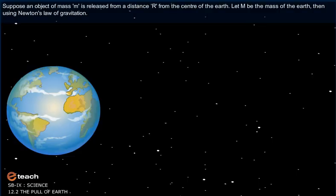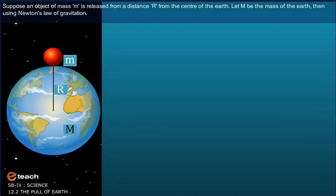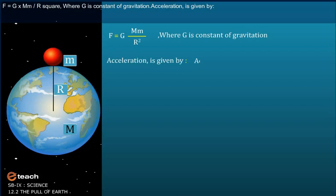Suppose an object of mass m is released from a distance R from the center of the Earth. Let M be the mass of the Earth. Then using Newton's law of gravitation: F = G × mM / R², where G is the constant of gravitation. Acceleration is given by force upon mass.